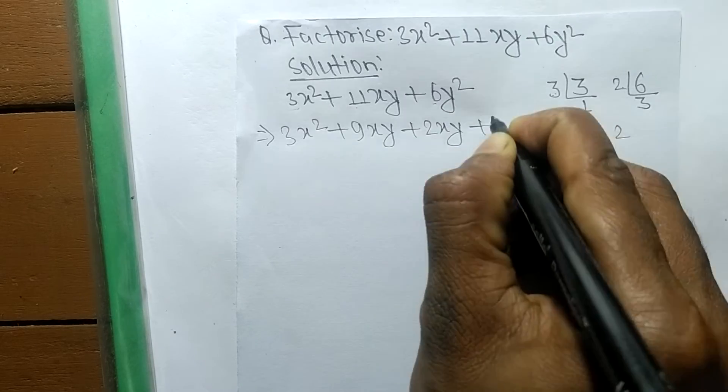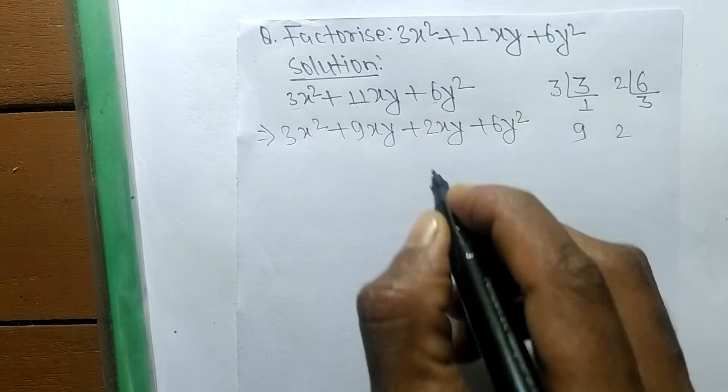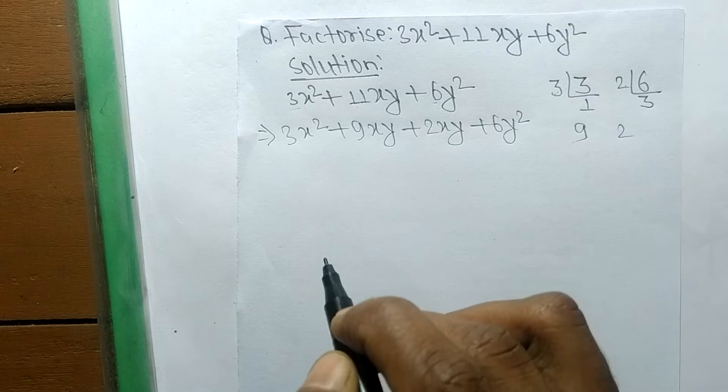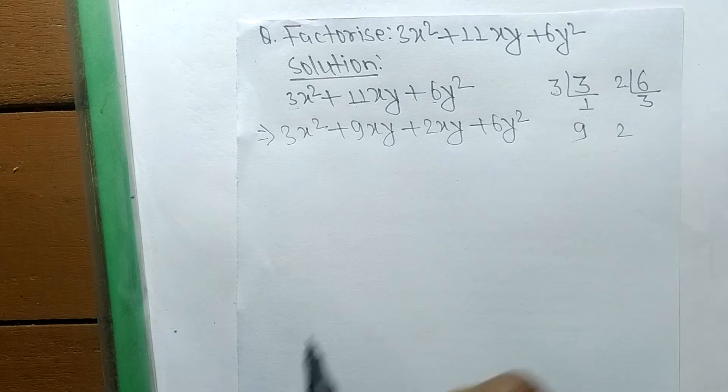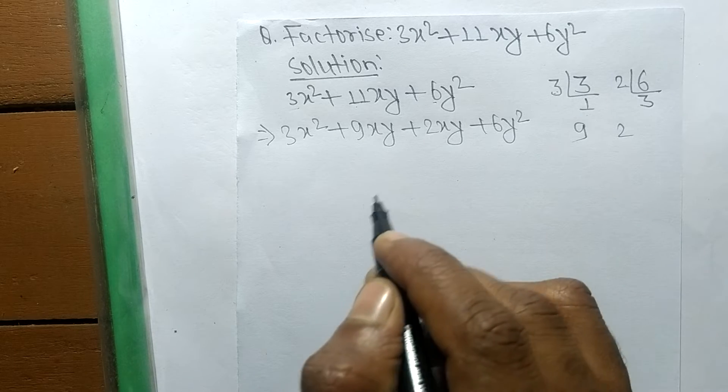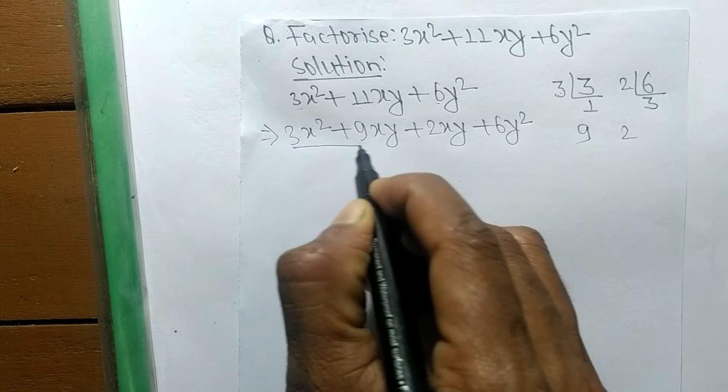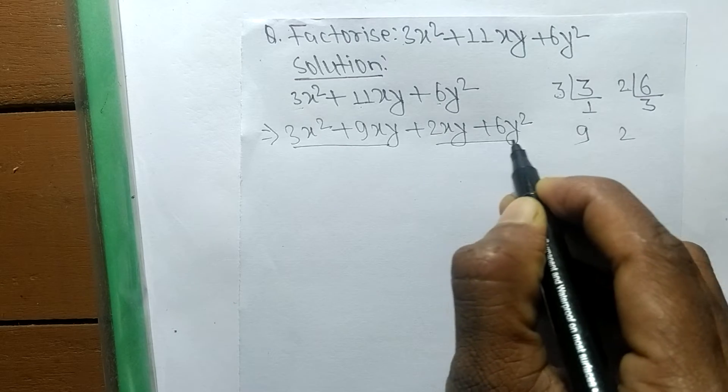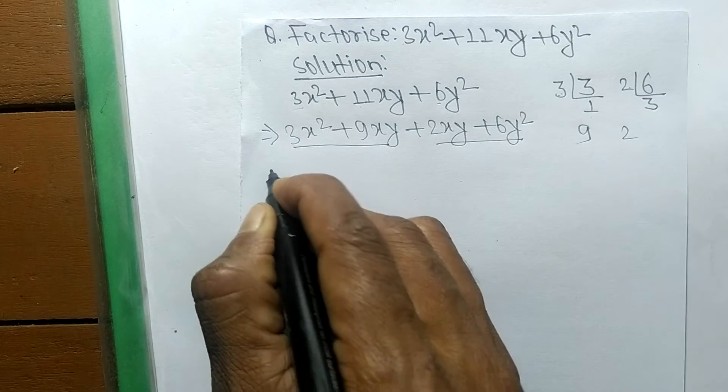So 9 plus 2 equals 11. Now we have to separate it into two pairs. These both are the first pair, and these both are the second one.